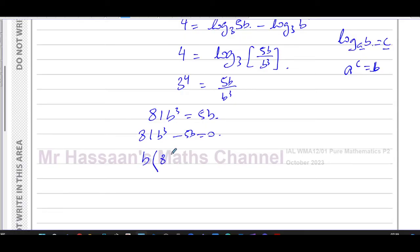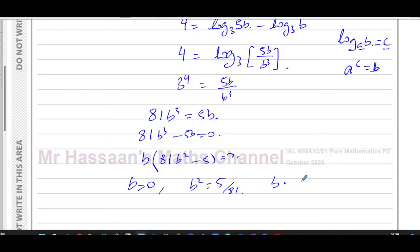So either b = 0, or 81b² − 5 = 0, which gives b² = 5/81, so b = ±√(5/81) = ±√5/9. The question asks for the exact value of b.